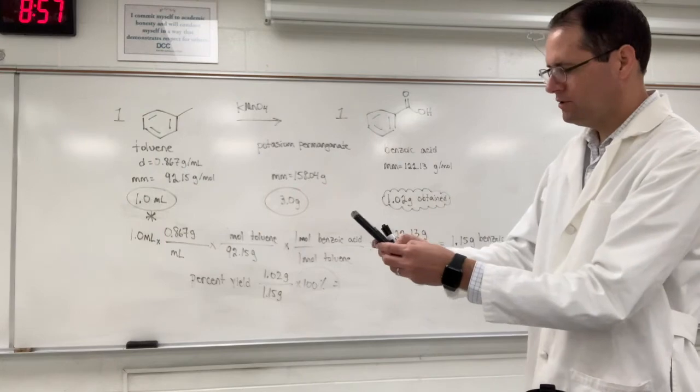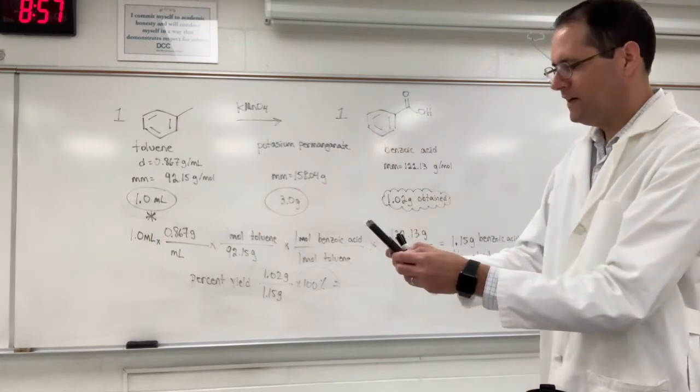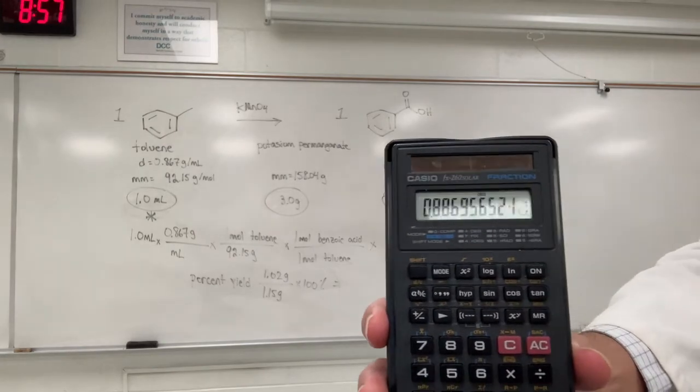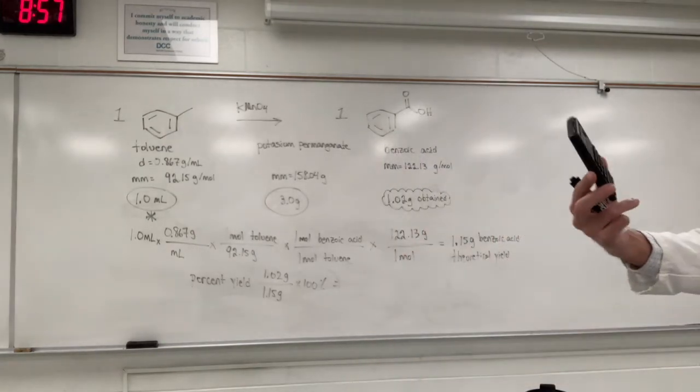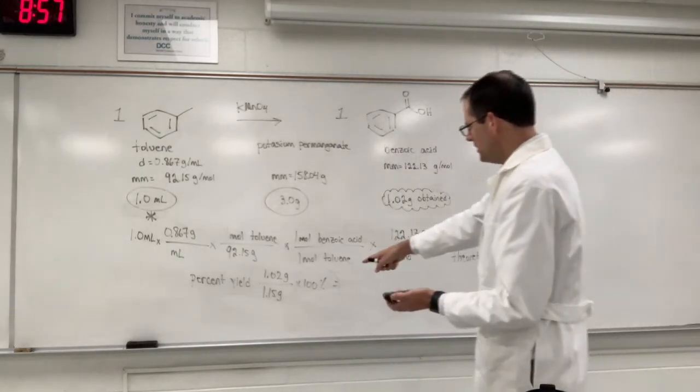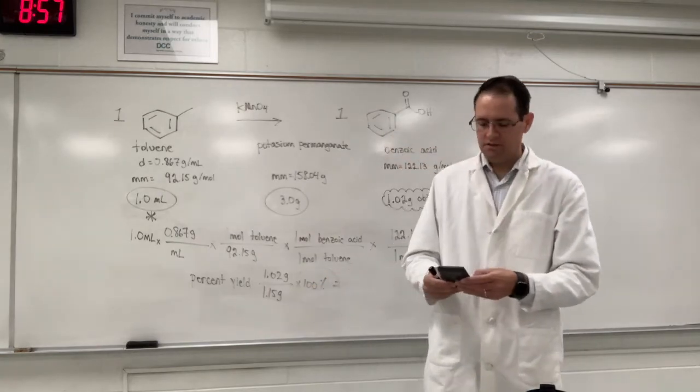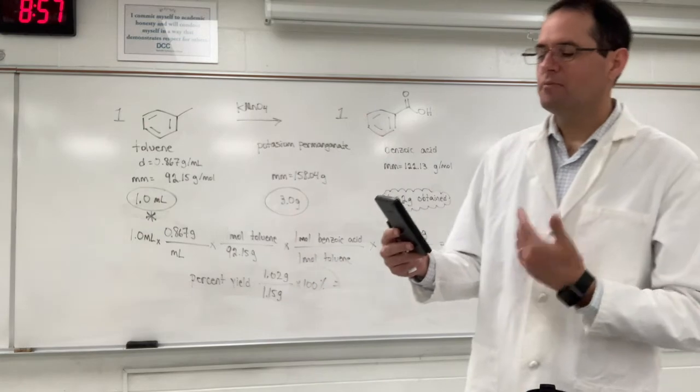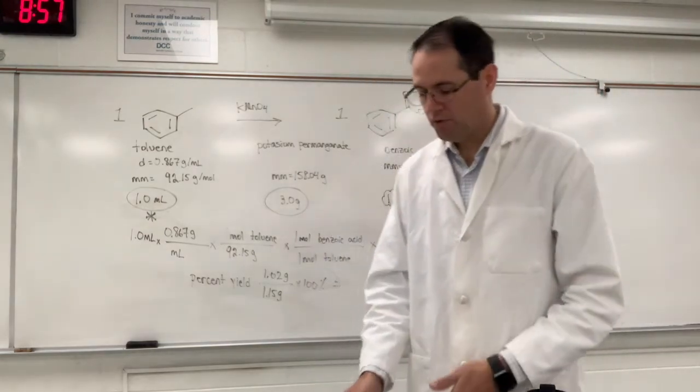So what we do is we type in 1.02 divided by 1.15 and you get 0.88 something on your calculator there. And so you want to move the decimal place over two places and it's easier to just type 100 sometimes on your calculator and you get 88.69 something percent.